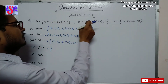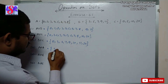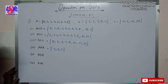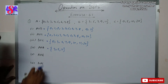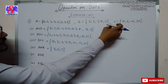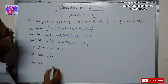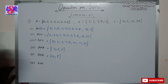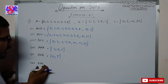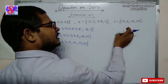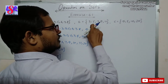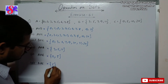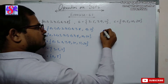For A intersection B, we write the common elements of A and B. Common elements are 3, 5, and 7, so A ∩ B = {3, 5, 7}. For A intersection C, the common elements are 0 and 5, so A ∩ C = {0, 5}. For B intersection C, the only common element is 5, so B ∩ C = {5}.